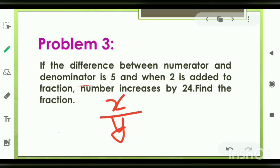In order to get the two values, how many number of equations you require? Two equations with two unknown variables. To form this very first equation, you have here difference between the numerator and denominator is 5.